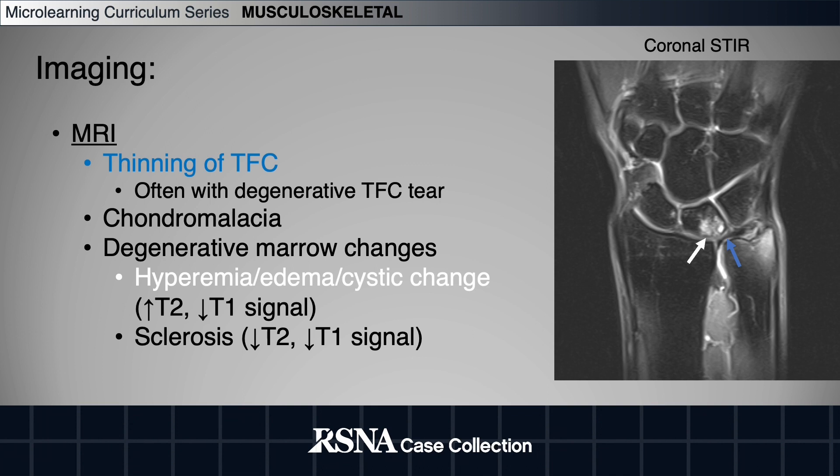Degenerative marrow changes can include edema and/or cystic change, which is hyperintense on the T2 weighted images and hypointense on the T1 weighted images. Subchondral sclerosis may also be present, which is hypointense on both the T2 and T1 weighted images.